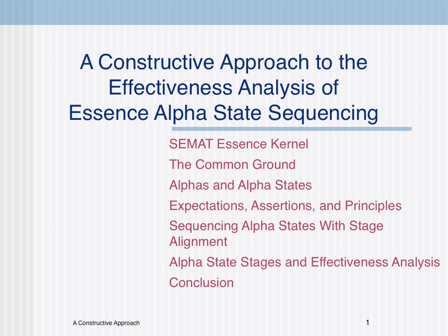A constructive approach to Essence alpha state sequencing focuses on anticipation and avoidance of known common problems encountered in software engineering projects. Using the preferred sequence of alpha states as a staged ordered baseline, this constructive approach to effectiveness analysis provides the means to detect root causes for common problems even before measurements are taken.